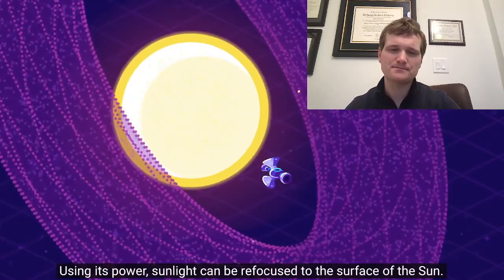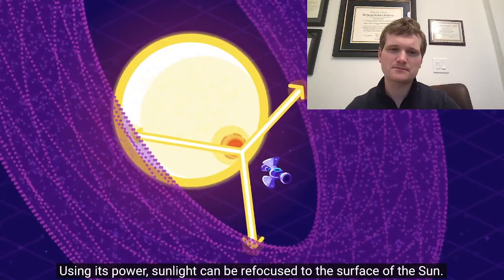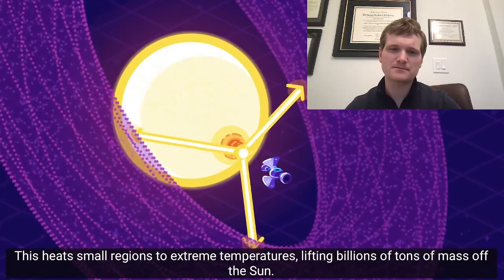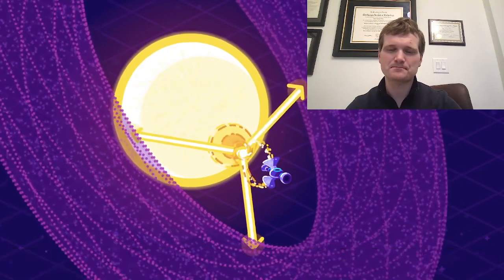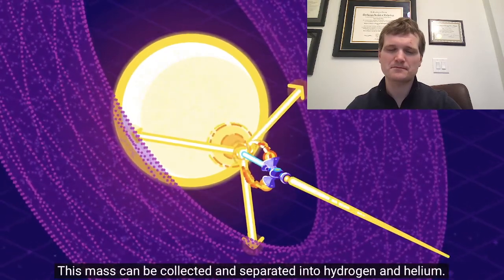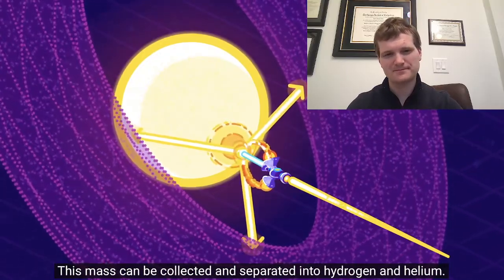And that's where the Dyson Sphere comes in. Using its power, sunlight can be refocused to the surface of the sun. This heats small regions to extreme temperatures, lifting billions of tons of mass off the sun. This mass can be collected and separated into hydrogen and helium.